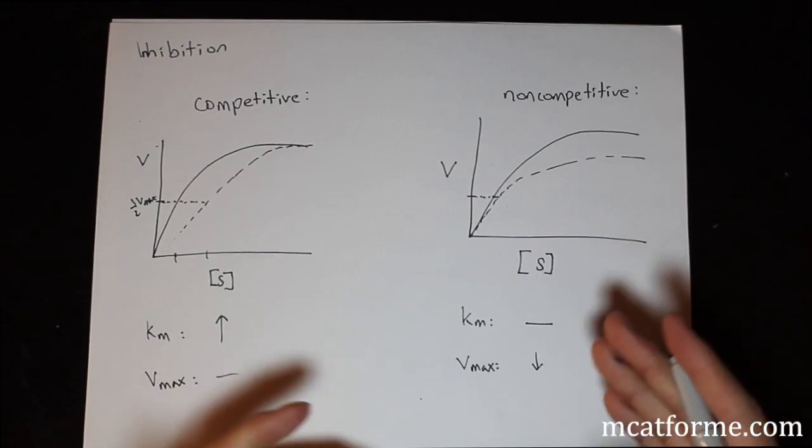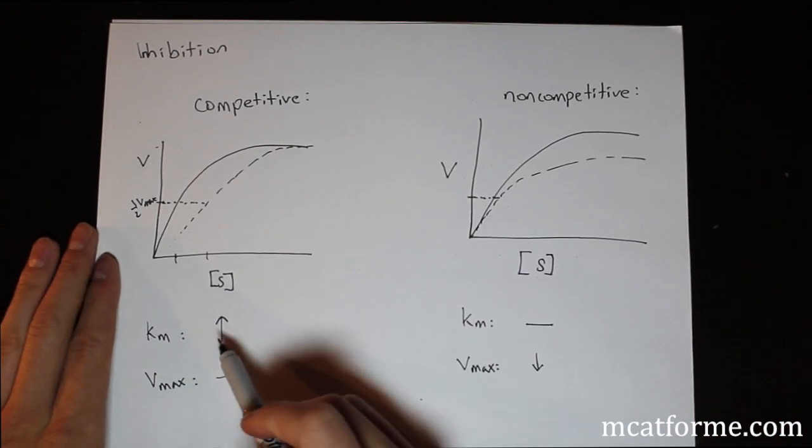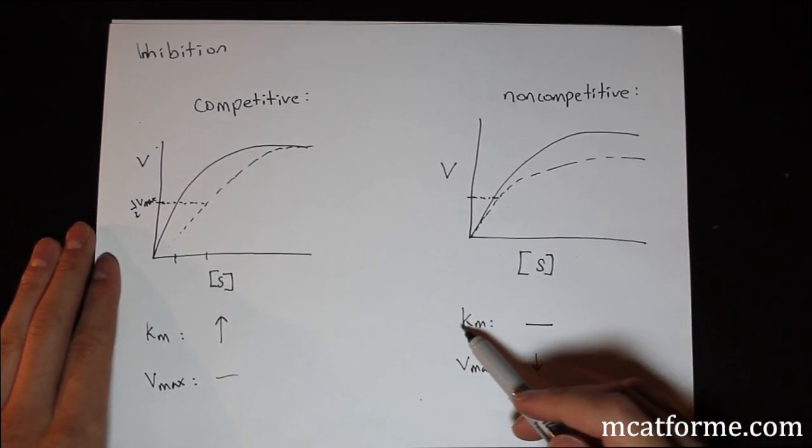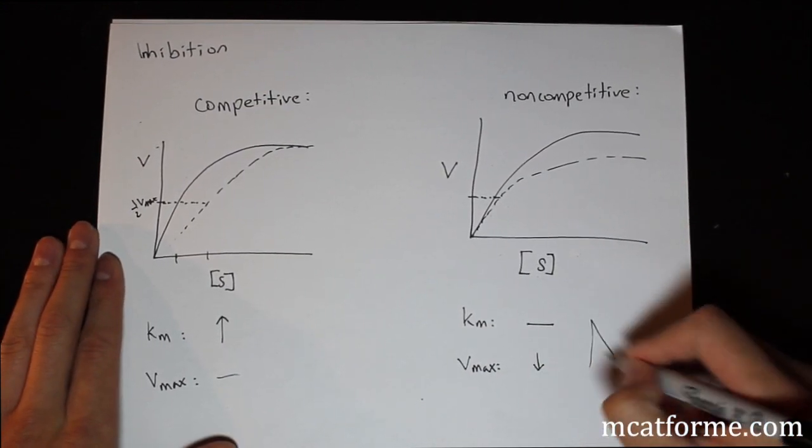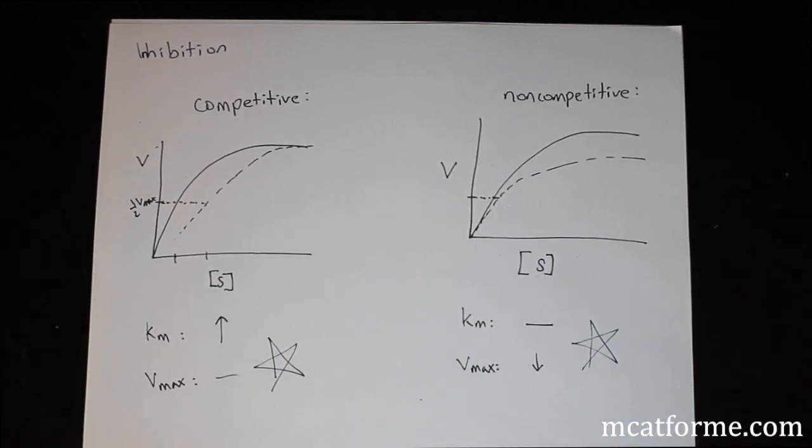So what we need to know is that for inhibition, competitive versus non-competitive: Km is going to increase for competitive, Vmax is going to be constant. For non-competitive, Km is going to be constant and Vmax is going to decrease. This is something you definitely want to keep in your memory. It'll show up on some practice test or another, and it's something that you can't just make up. You have to just memorize it.